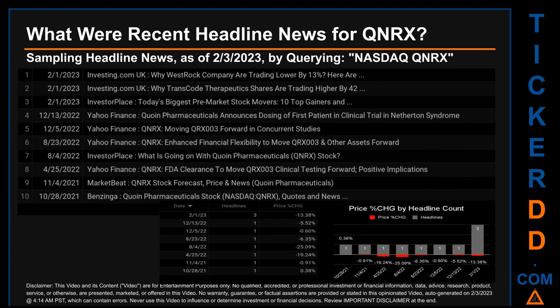The results show 10 unique headlines published across 8 unique dates. Publication dates spanned 461 days. The latest publication was Wednesday, February 1, 2023, when there were 3 found headlines. Investing.com UK published the headline: 'Why Westrock Company are trading lower by 13%.' Investing.com UK also published: 'Why Transcode Therapeutics shares are trading higher by 42%.' Investor Place published: 'Today's biggest pre-market stock movers: 10 top gainers.'